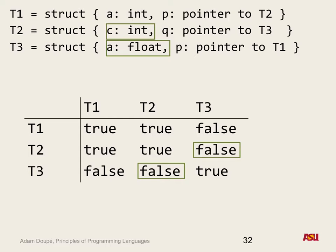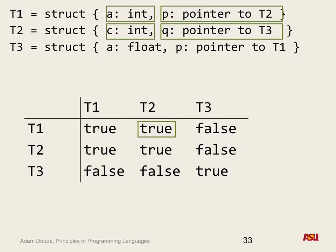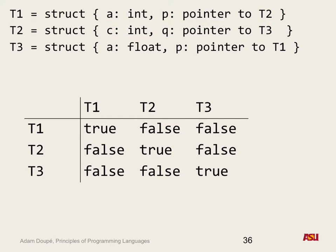Are we done after one iteration? No — we made changes, so we have to do it again. Checking T1 and T2: is the pointer to T2 equivalent to the pointer to T3? Now the table says T2 and T3 are false, so that gets changed to false. Could this table change anymore? No — so we stop. If nothing changes in an iteration, we stop. That's the termination condition.